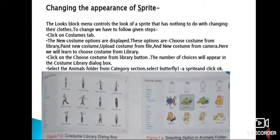Here we will learn to choose costume from Library. Click on the Choose Costume from Library button. The number of choices will appear in the Costume Library dialog box. Select the Animals folder from Category section, select Butterfly 1 sprite and click OK.